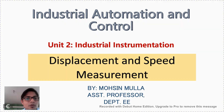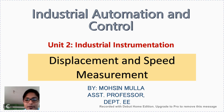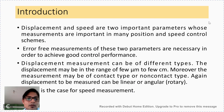Hello friends, my name is Mohsin Mullah and I welcome you to this video lecture on UNIQ 2 Industrial Instrumentation of Industrial Automation and Control. In this video lecture, we are going to see Displacement and Speed Measurement. Displacement and speed are two important parameters whose measurements are important in many position and speed control schemes. Error-free measurements of these two parameters are necessary in order to achieve good control performance.